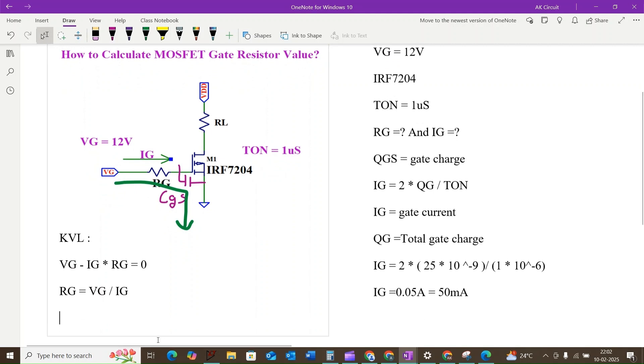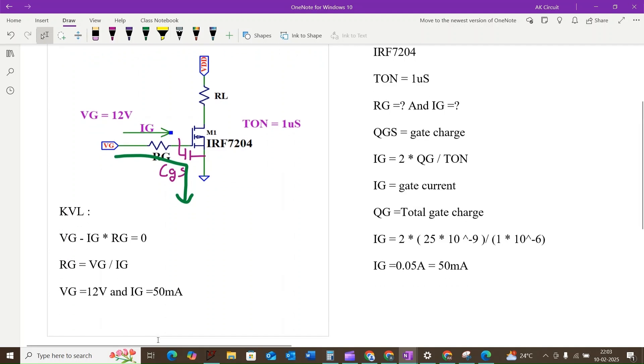Now we can plug in the values we know. VG is equal to 12 volts and IG is equal to 50 milliamps. The result will be RG is equal to 12 volts divided by 50 milliamps.